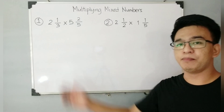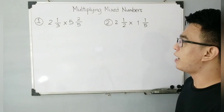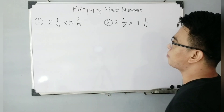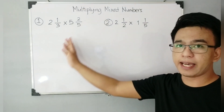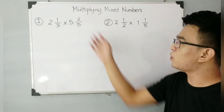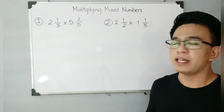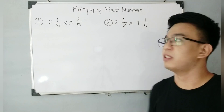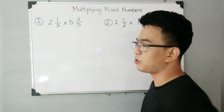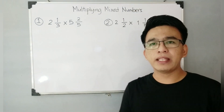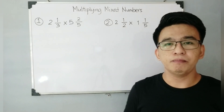We have here two examples so our video won't be too long. I have two sets of mixed numbers. We have number 1: 2 and 1 third times 5 and 2 over 5. By the way, for those students who don't know what a mixed number is, it is a combination of a whole number and a fraction. So that's why we have 2 as your whole number and 1 third as your fraction. So, how do we multiply mixed numbers?